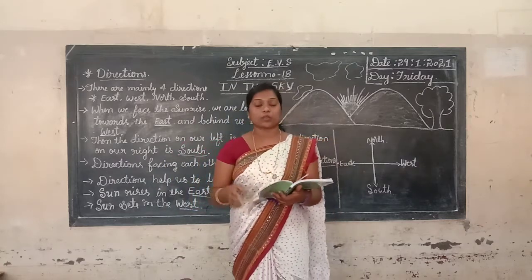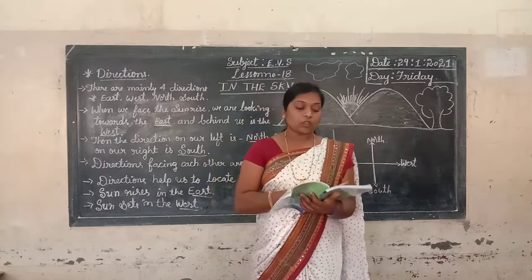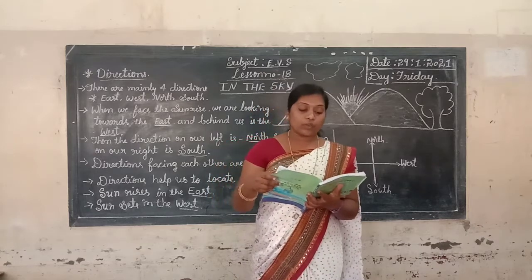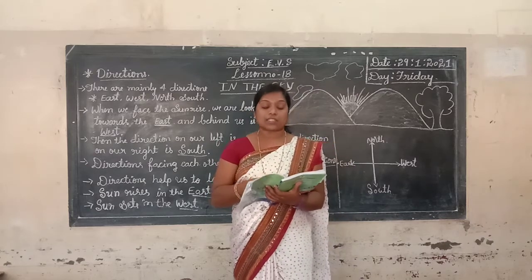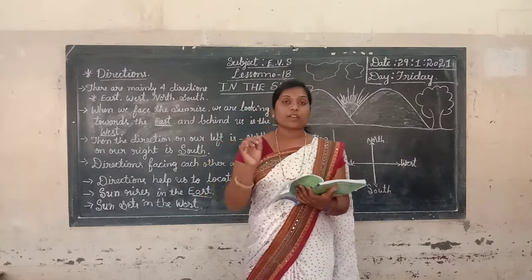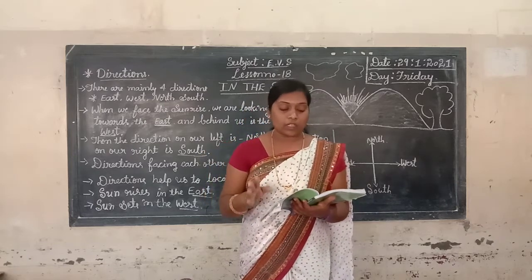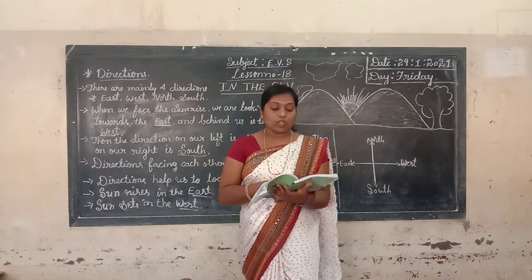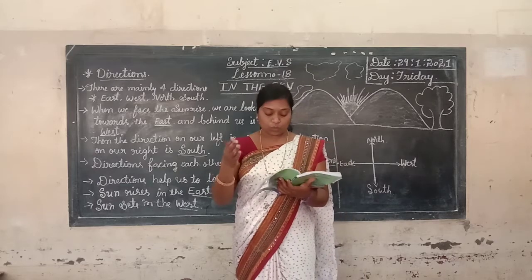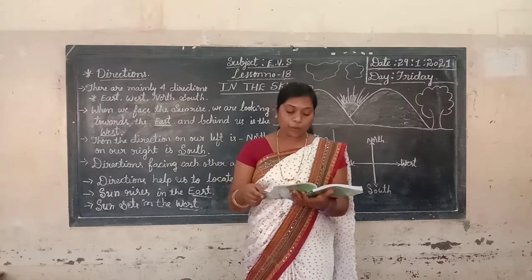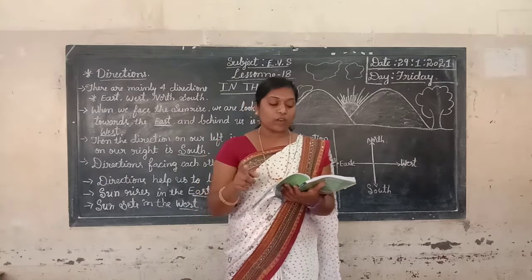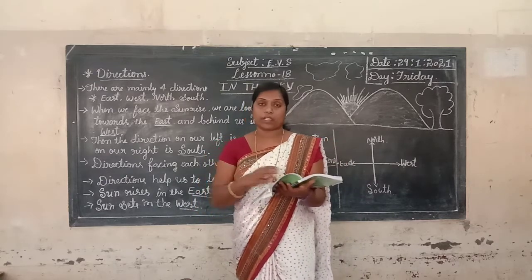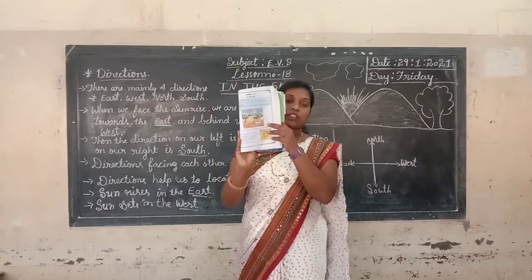Children, do you have your textbook? Please open page number 144. This is a continuation of your lesson. After studying, we will observe the sun, moon and stars and identify their characteristics, and also identify the four directions — east, west, north and south. Children, look at the following picture on page 144.